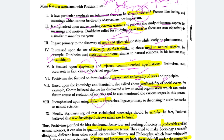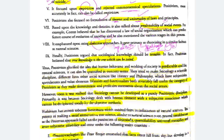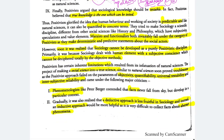The deductive, top-down approach means the hypothesis is built first, and research is conducted around it. Finally, positivists argued that sociological knowledge should be testable — true knowledge is the one which can be tested. Thus, positivism has glorified the idea that human behavior and the working of society is predictable and you can quantify it in concrete terms, because the thing is predictable.